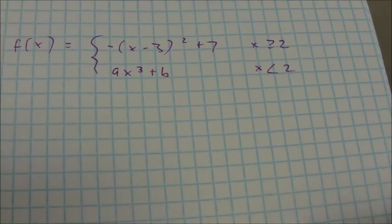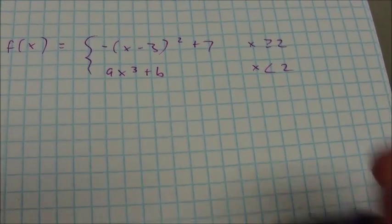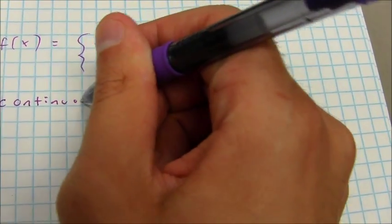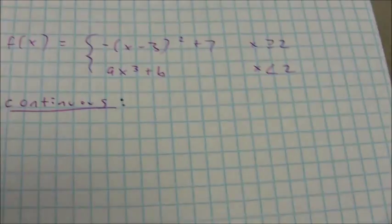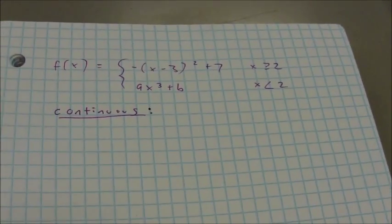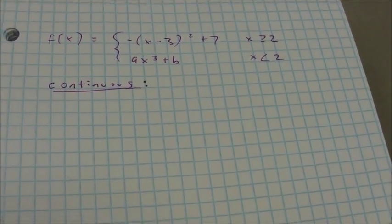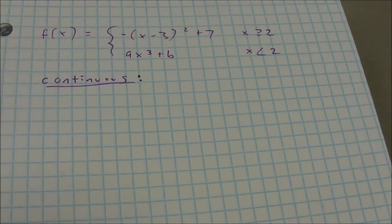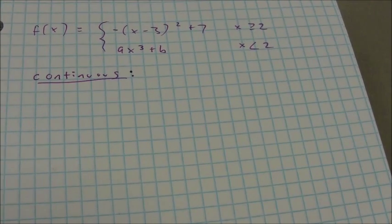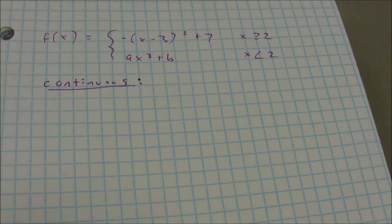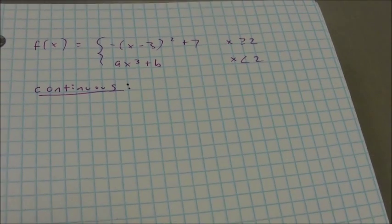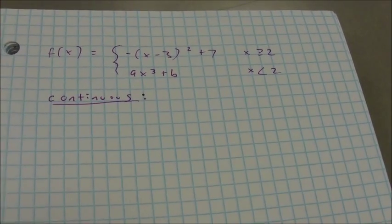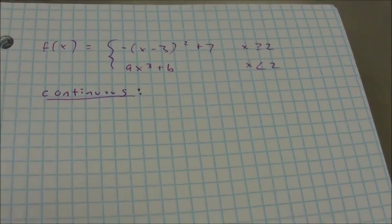The first thing I want to do is show that this has to be continuous — specifically, I need to find values of A and B that make this continuous. Keep in mind, the AP people want to see limits here. If this function is going to be continuous, the right and left-hand limits are going to approach the same value, and that value needs to be the same value that the function is defined at when x is equal to 2.